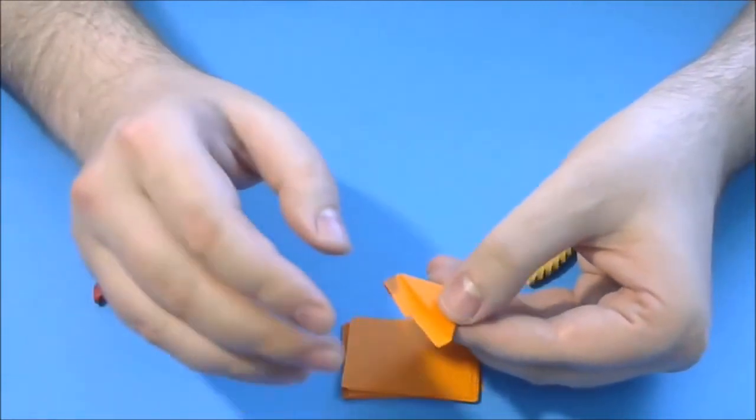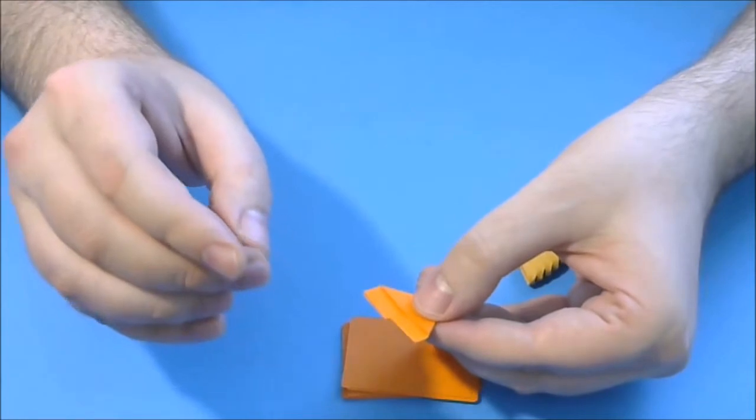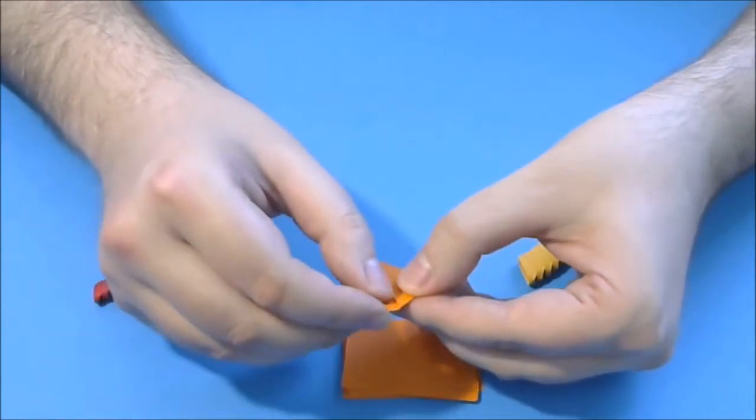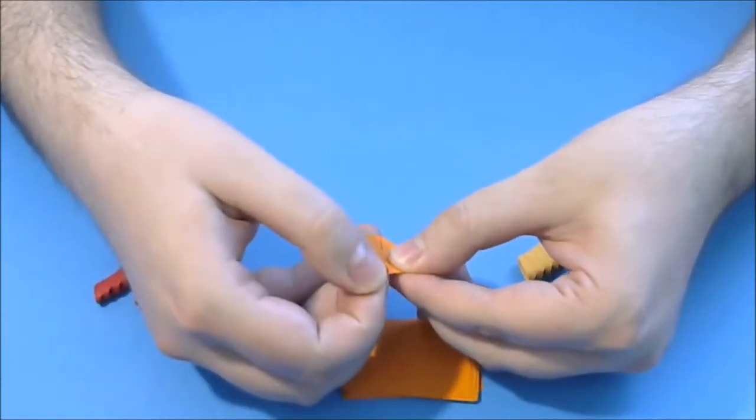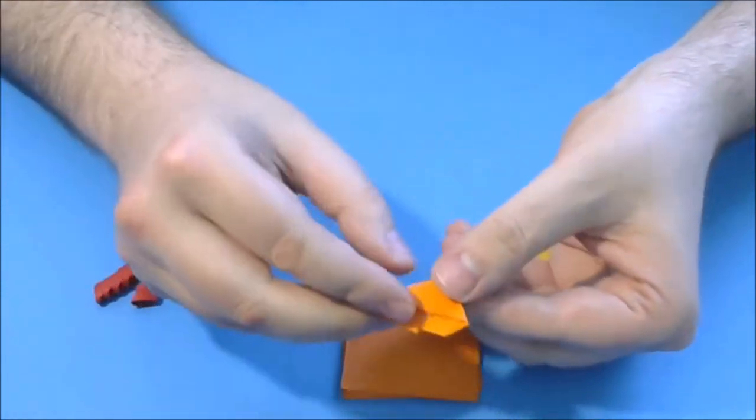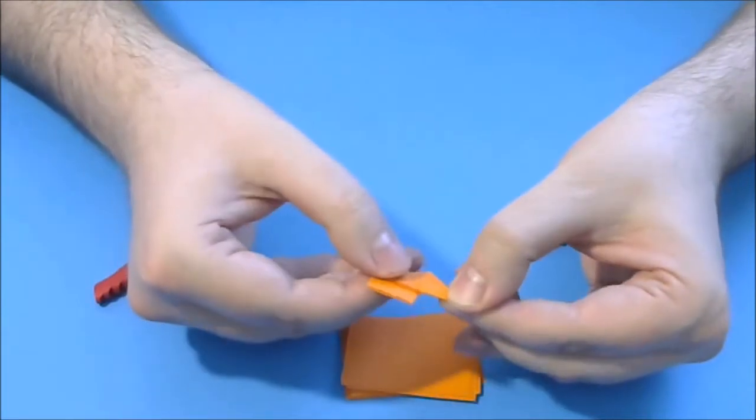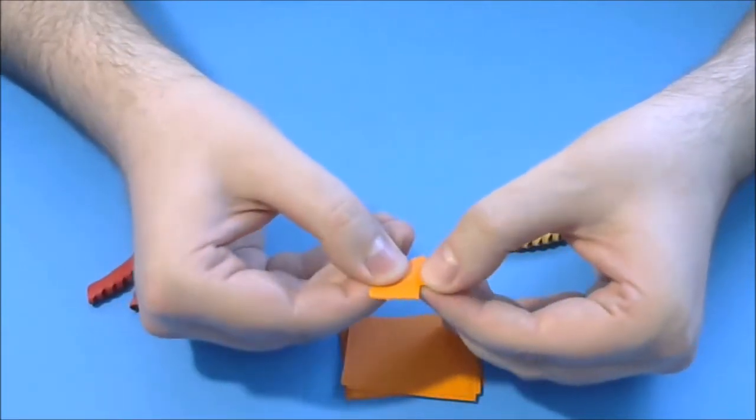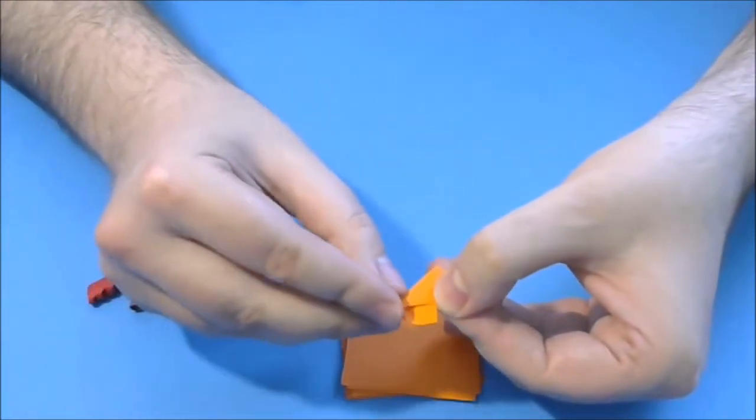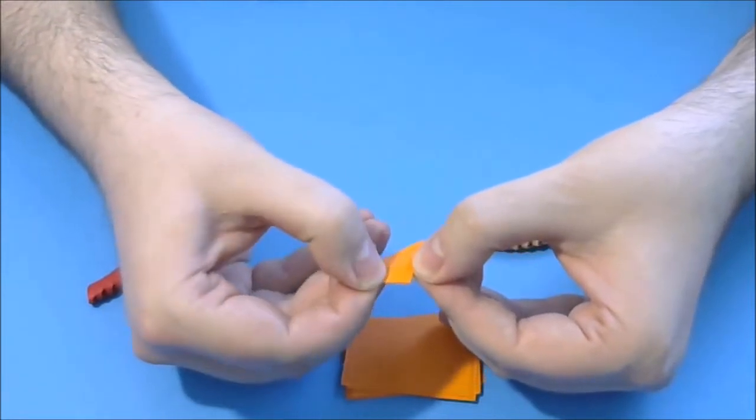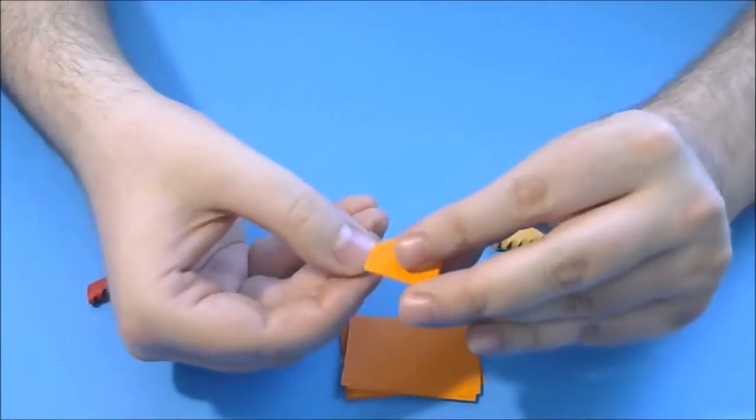The fourth and the fifth steps, we can make them together. We fold first this small edge here like this and then we bring the part of the paper to obtain the triangle. And we repeat on the other side in this way.